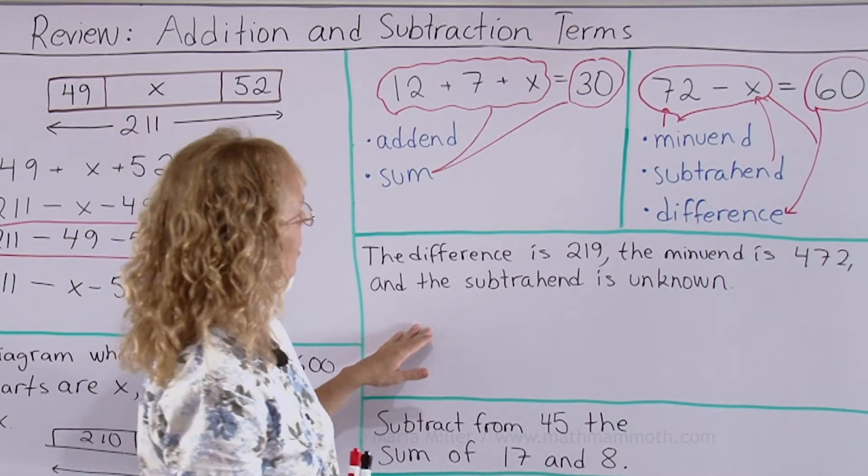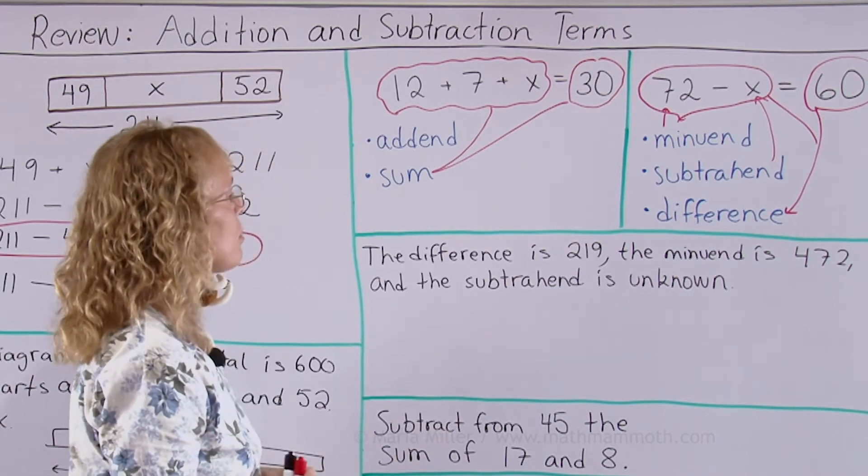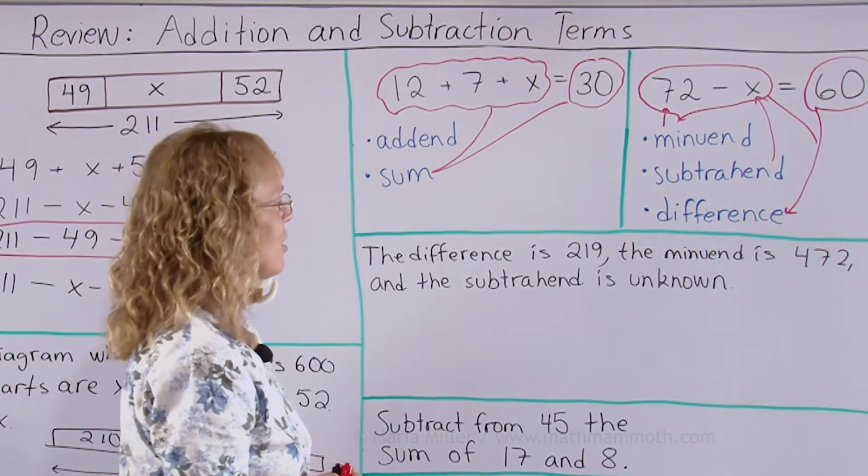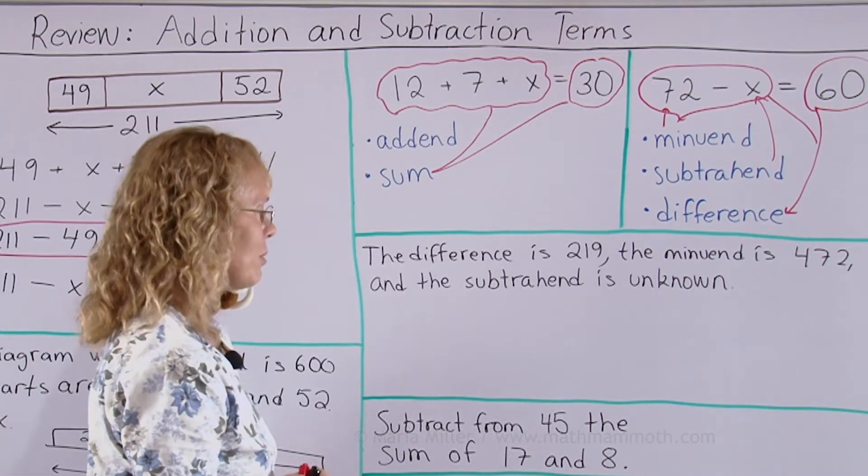Now let's go on. Here is a problem that practices these terms. The difference is 219, the minuend is 472 and the subtrahend is unknown. What is it Matthew?